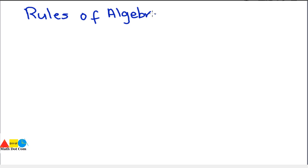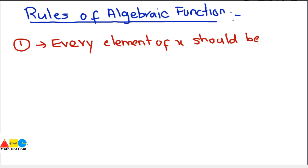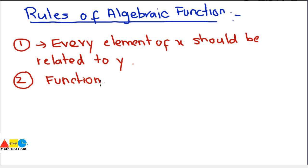The rules for algebraic functions are the same as the rules for ordered pairs in determining whether a given relation is a function or not. Let's revise these rules. Condition one: every element of x should be related to y — there should be no element of x for which the output is not found, so we must find the output for every element of x.